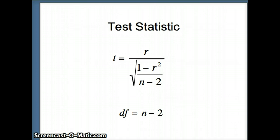Our test statistic t is going to be r divided by the square root of 1 minus r squared over n minus 2. And our degrees of freedom are n minus 2.